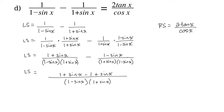So in the numerator we have 1 plus sine x minus 1 plus sine x. Combining: 1 minus 1 is 0, and sine x plus sine x is 2 sine x. Now let's look at the denominator — we have 1 minus sine x multiplied by 1 plus sine x. Notice that this is the factored form of a difference of squares, so when we expand this we just get 1 minus sine squared x.